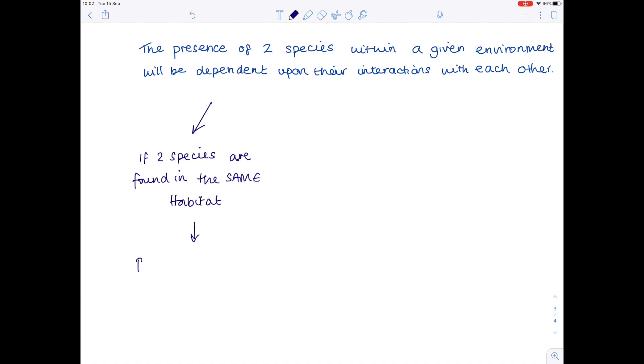Let's start by writing a few notes. The presence of two species within a given environment will be dependent upon their interactions with each other. If two species are found within the same habitat, the place that they live, then you have a positive association. If two species are not found in the same habitat, then clearly you'll have a negative association.